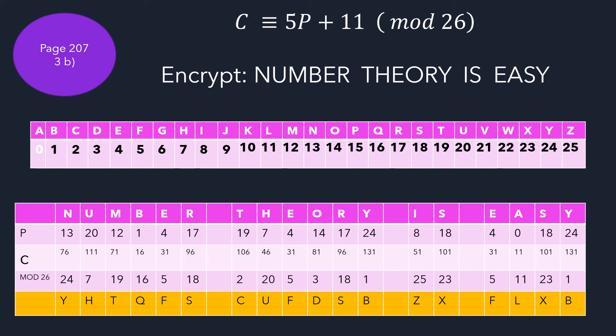Now using that congruence equation, 5P plus 11, we can find the value for C. 5 times 13 plus 11, 5 times 20 plus 11, etc. So those are the numbers given in the third row. You can convert that into modular arithmetic mod 26. So 76 is the same as 24 mod 26, 111 is 7 mod 26, etc.